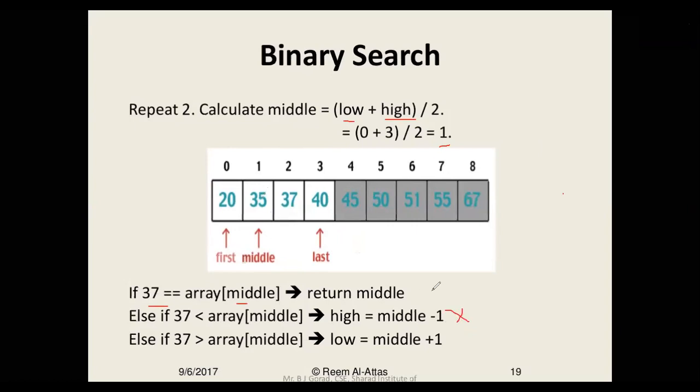Is 37 smaller than 35? No, right, so this one is also discarded. But is 37 larger than array middle? Yes, 37 is larger than 35. So we update the value of low which was initially 0, now it becomes middle plus 1, which is 2.